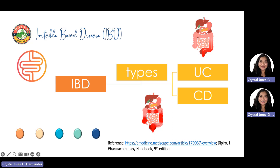While in most patients the disorders can be distinguished, in at least 10% of patients the features are so similar that it is not possible to initially differentiate between the two disorders. Both disorders have a genetic predisposition, neither is curable, and they both carry enormous morbidity. Finally, both increase the risk of colorectal cancer.